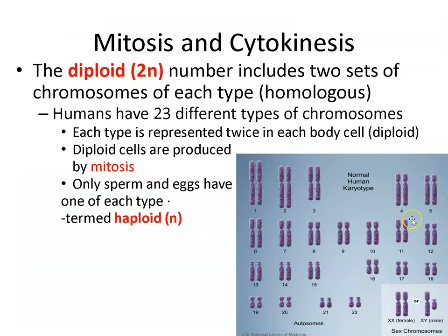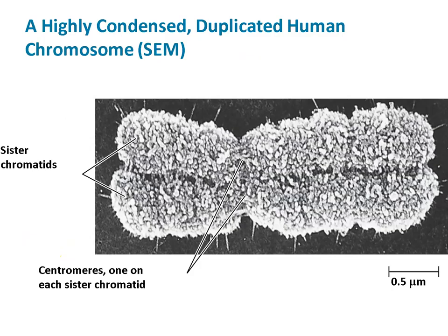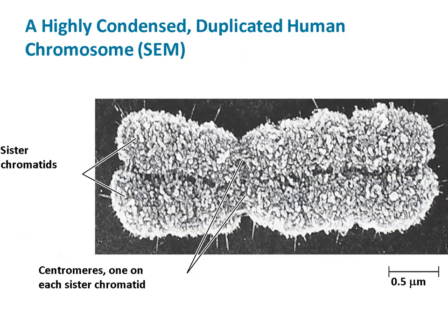More definitions: here's a karyotype. Two X chromosomes is female; XY is male. The diploid number includes the two sets of chromosomes. Diploid cells are produced by mitosis. Sperm and eggs have only one set and are called haploid. A process called meiosis produces haploid cells.